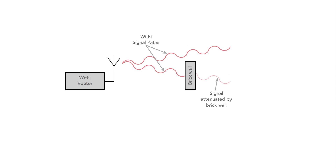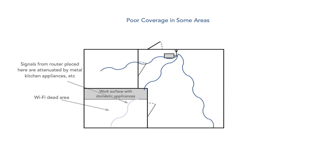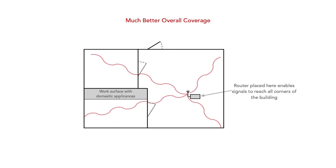Second, we also need to make sure that the router is located so that the signal doesn't need to travel — to anywhere you're going to use it a lot — through thick brick walls or anything else that might really absorb the signal.